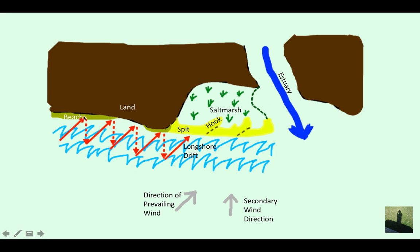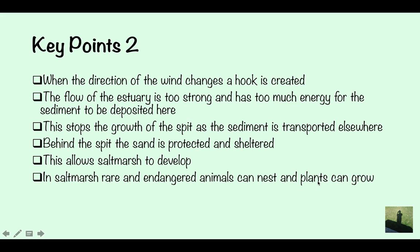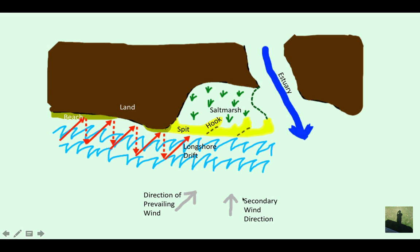With the same diagram but different annotations: when the direction of wind changes, a hook is created. This bit here is the hook. You can label the wind direction on your diagram — the direction of prevailing wind and secondary wind direction. When it changes from the prevailing wind to the secondary wind direction, that creates a hook.